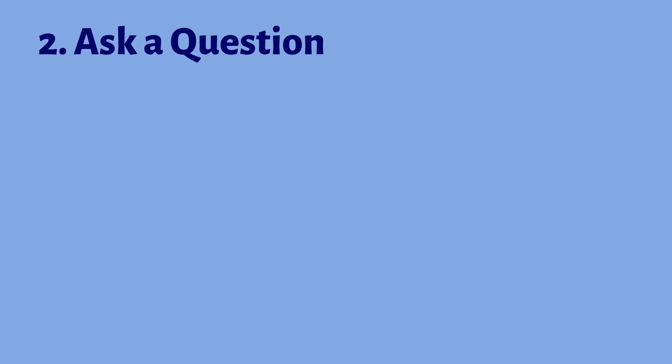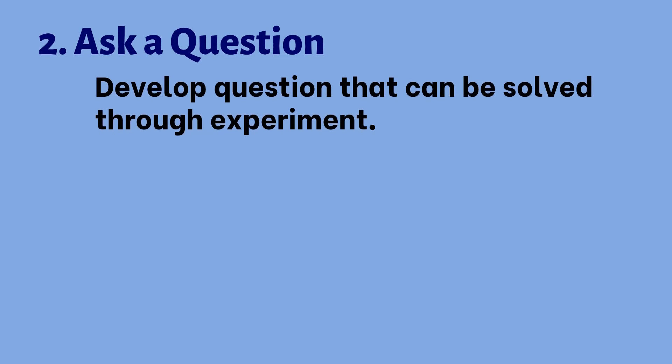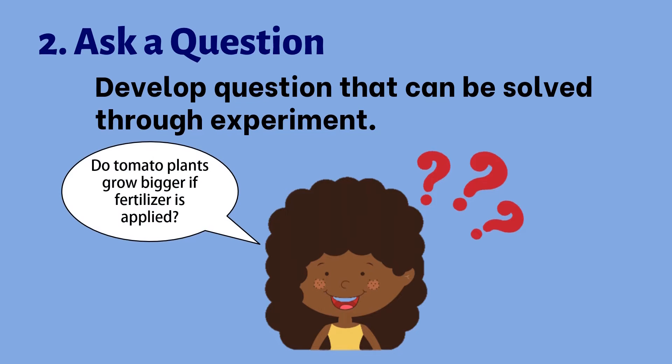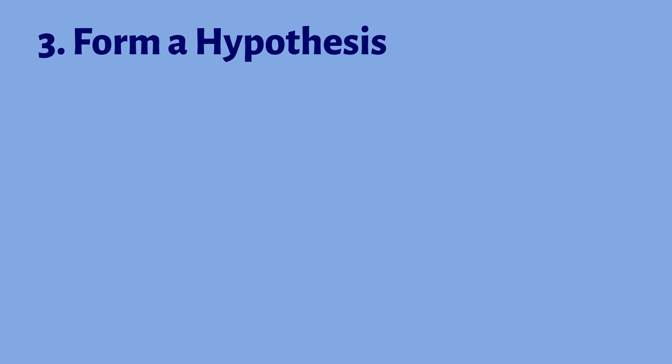The second step is asking a question. In this step, the scientists develop questions that can be solved through experiments. Betty then asks a question: will the tomato plants grow bigger if fertilizer is applied?